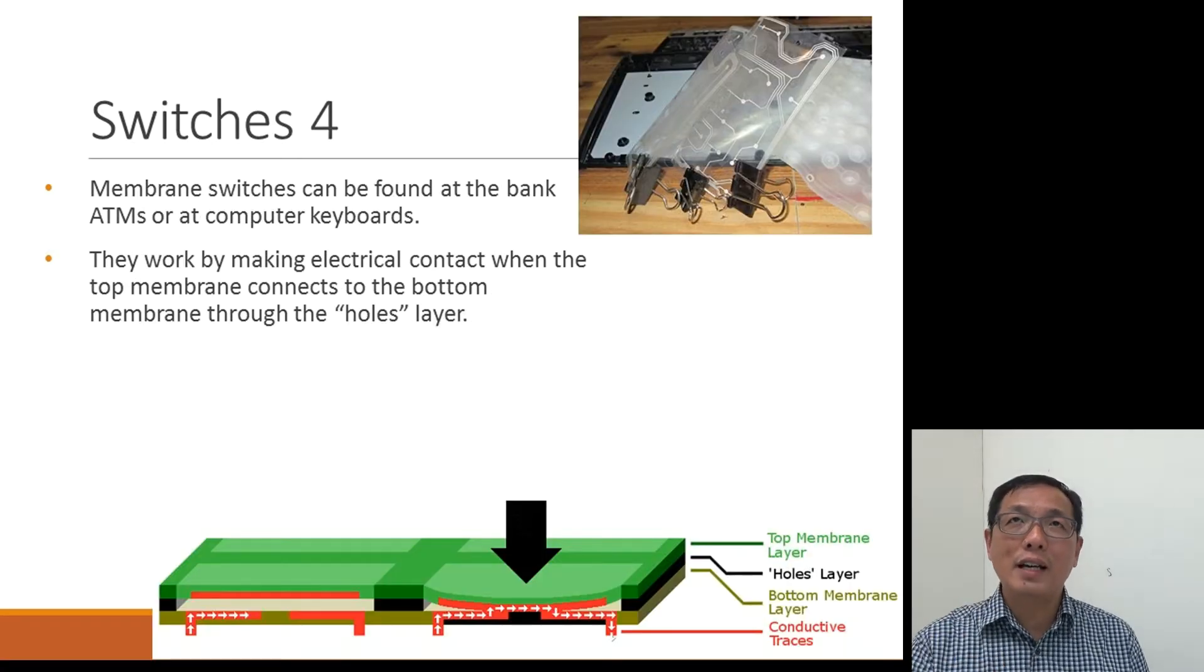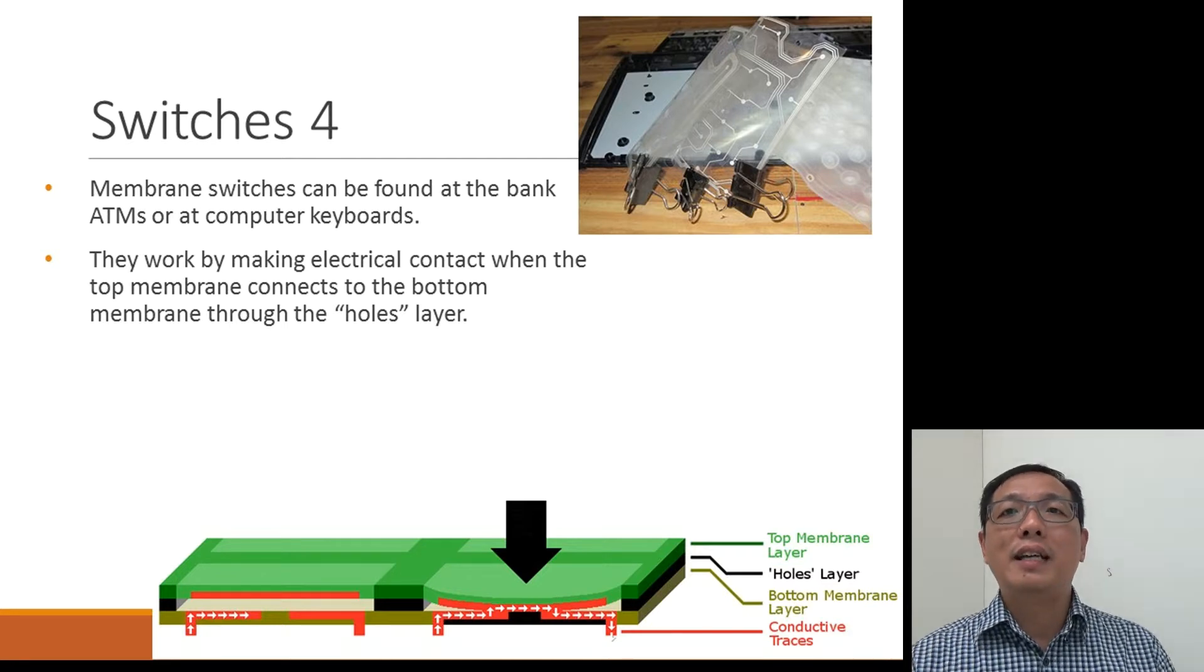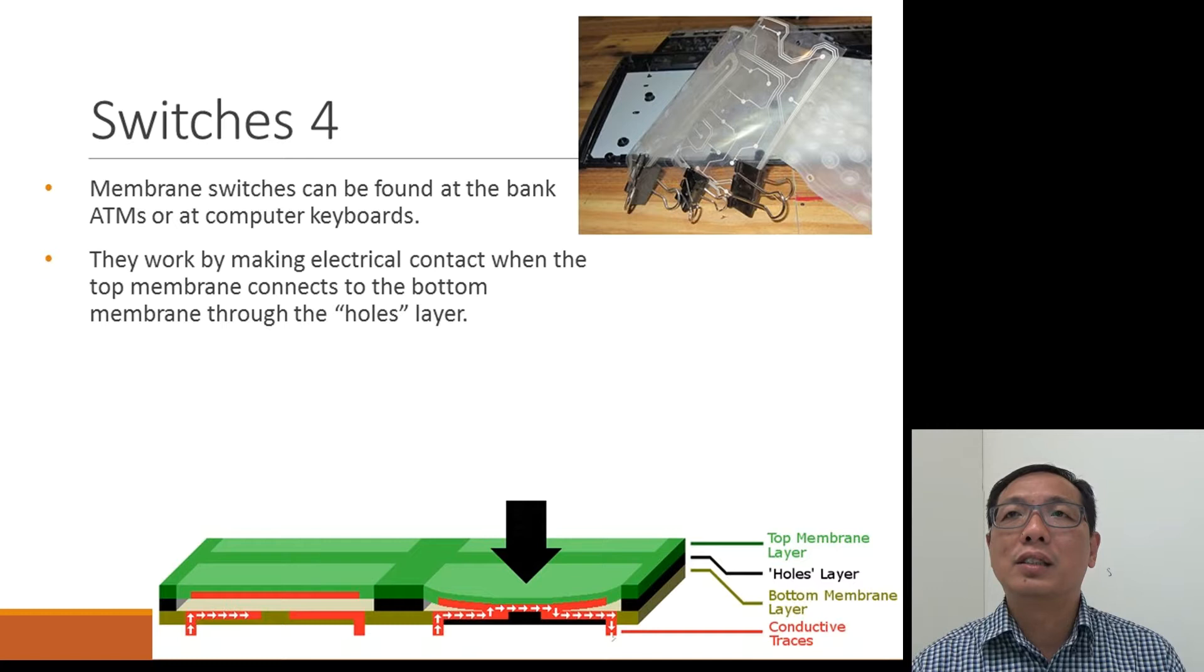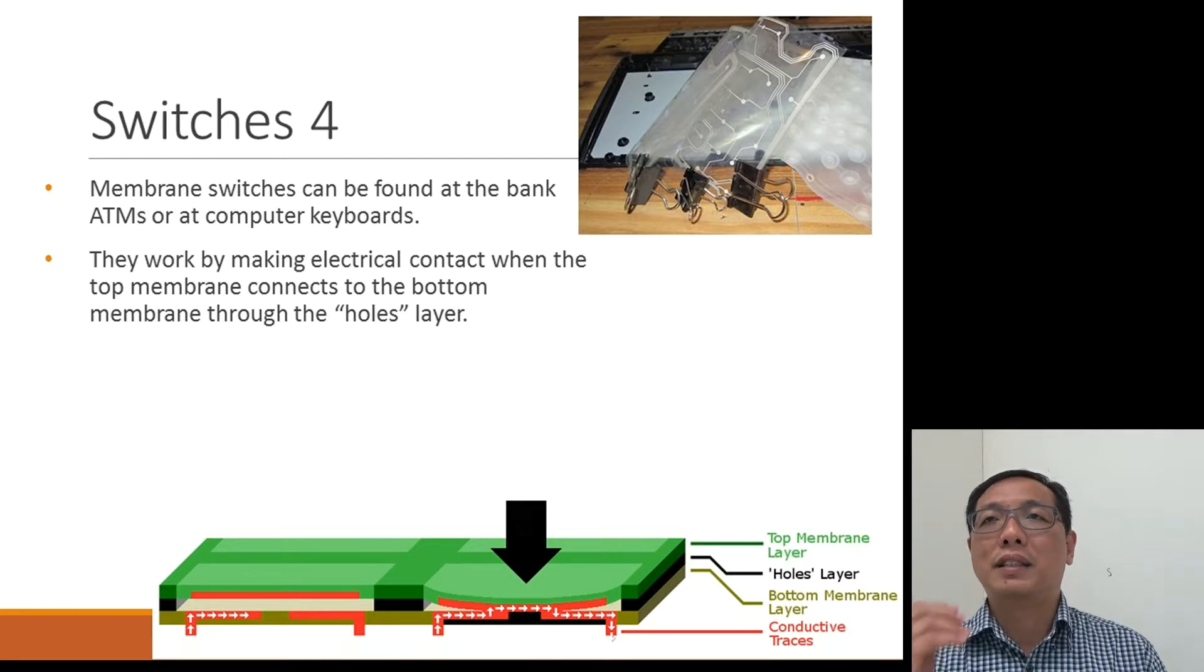The fourth one we have here is the membrane switches. These are found in banks, ATM, computer keyboards. There are three layers. The bottom layer, which is the bottom membrane layer. Then on top of the bottom membrane layer, there are the conductive traces, which are metal surfaces. The center, you have the holes. This is where the buttons can be pressed. And on top of that, there's the top membrane layer.